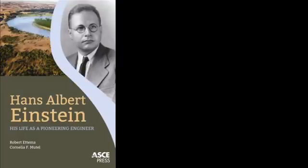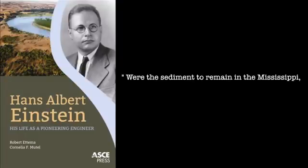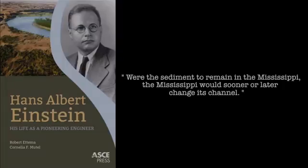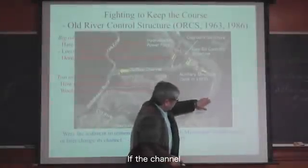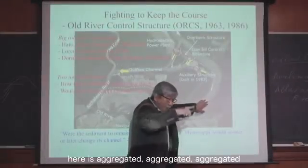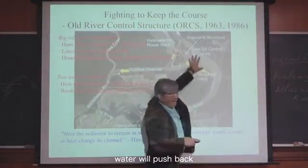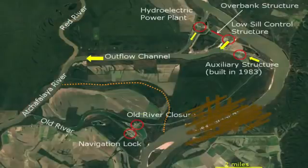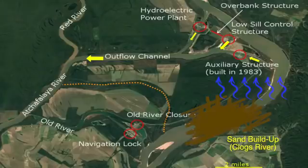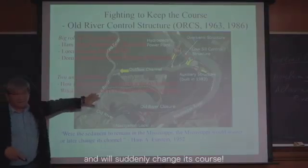Einstein already said: if the sediment were to remain in the Mississippi, the Mississippi would sooner or later change its channel. If the channel is aggraded — when you have a flood — water will push back. It's like a pipe clogged: the water rises up, overpowers your control structure, and will suddenly change its course.